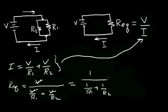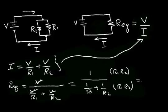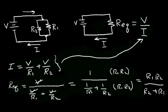Let's simplify this expression by multiplying the numerator and denominator by R1 times R2. When we do this, we get R1 times R2 in the numerator, and in the denominator the R1 cancels to give R2, and the R2 cancels to give R1, so we get R2 plus R1. The equivalent resistor is the product of the two resistors divided by their sum.